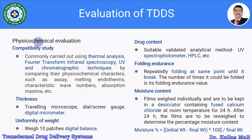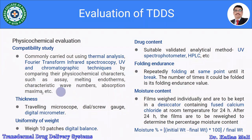The compatibility study is commonly carried out using thermal analysis — DSC — and FTIR (Fourier transform infrared spectroscopy), UV, and chromatographic techniques, by comparing physicochemical characters such as assay, melting endotherm, characteristic wave numbers, and absorption maxima, in order to determine compatibility of the drug with the other excipients used in the transdermal patch.